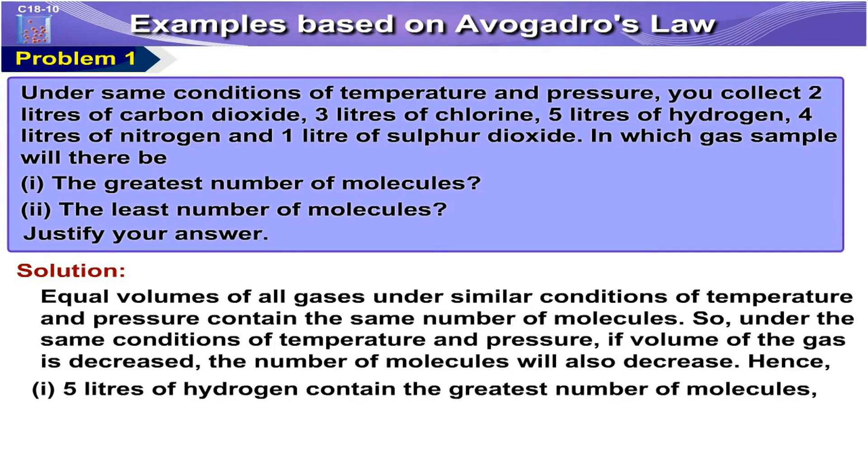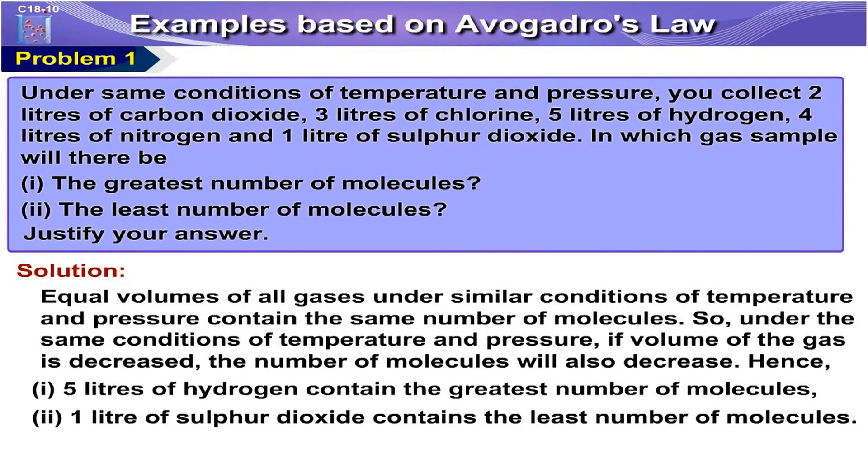Hence, Number 1: 5 liters of hydrogen contain the greatest number of molecules. Number 2: 1 liter of sulfur dioxide contains the least number of molecules.